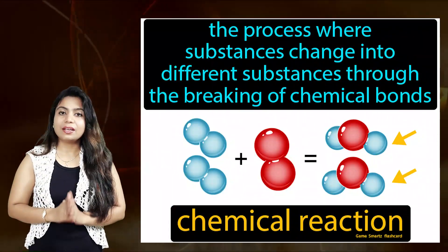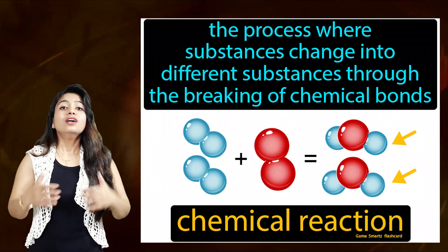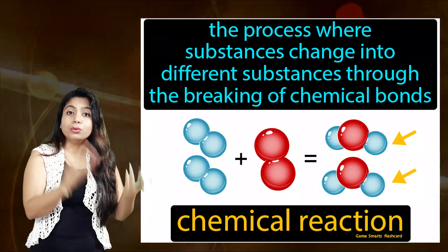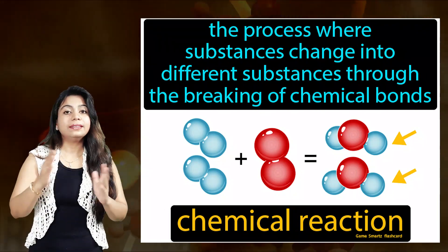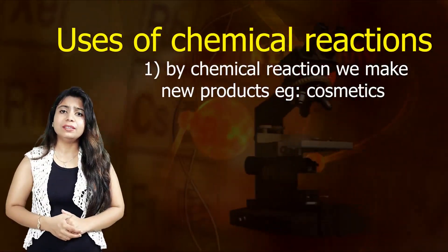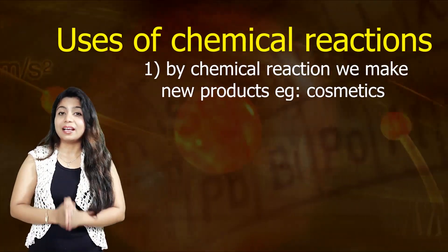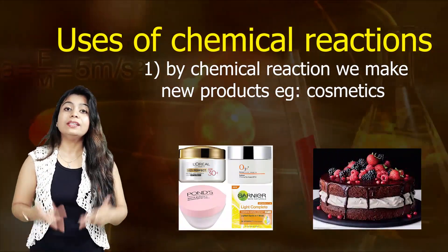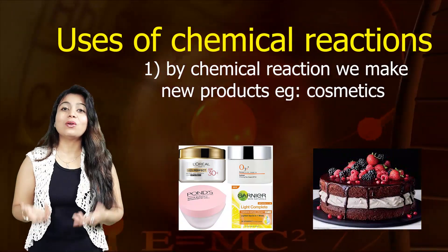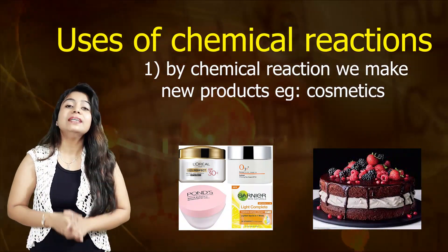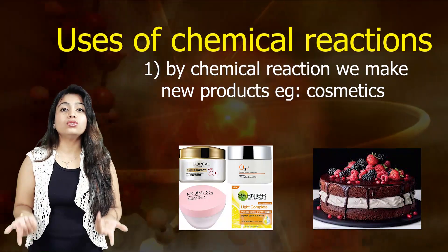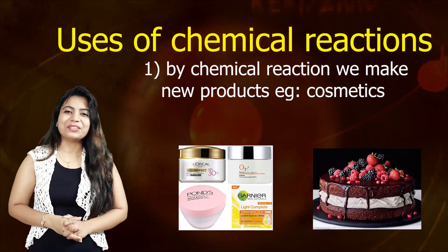What is a chemical reaction? A chemical reaction is when substances form new substances. New substances are formed when the bonds between substances are either broken or a new bond is formed. That is called a chemical reaction. Because of these chemical reactions, we get new products — cooking of food, baking of cake, cosmetic products like moisturizers and creams. That's why chemical reactions are very important.